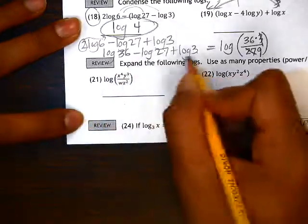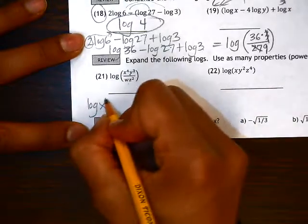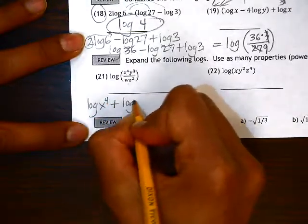So multiplication, when we expand it into multiple logs, changes to addition. So we have log of x to the fourth plus log y cubed.